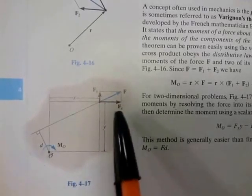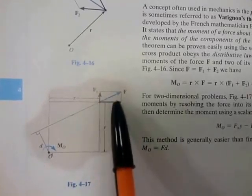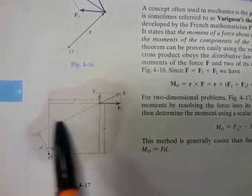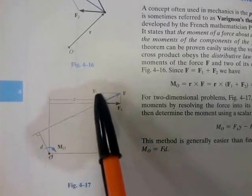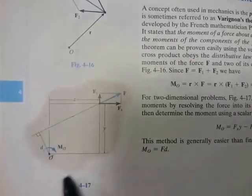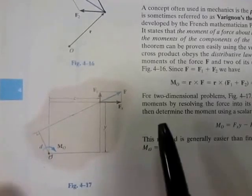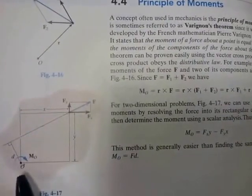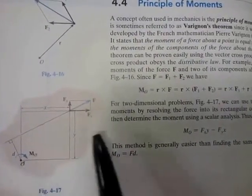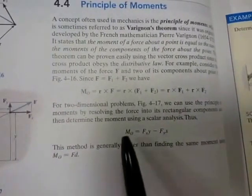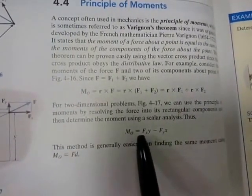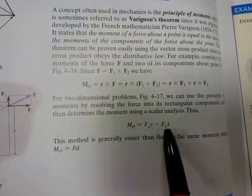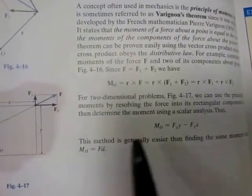Now this Fₓ causes a clockwise moment, and the Fᵧ causes an anti-clockwise moment. If we use our normal convention of saying anti-clockwise is positive, then what we should have here is minus Fₓ times y plus Fᵧ times x.